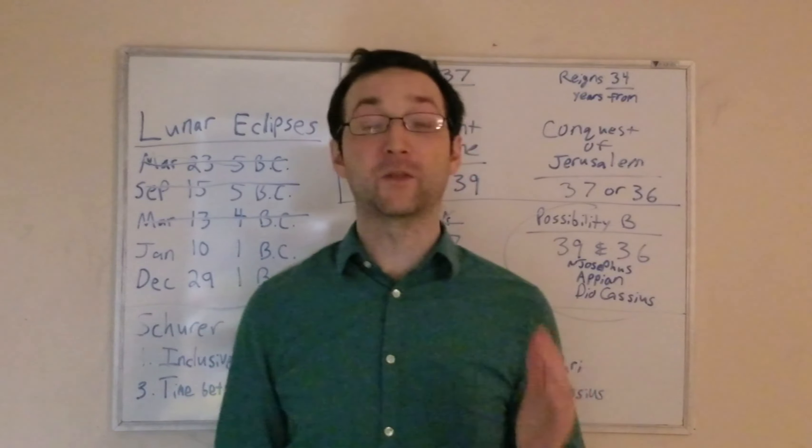If Herod dies in the 37th year of his reign, this is our eclipse. If Herod dies after having reigned 37 years, and he's in his 38th year, this is our eclipse.